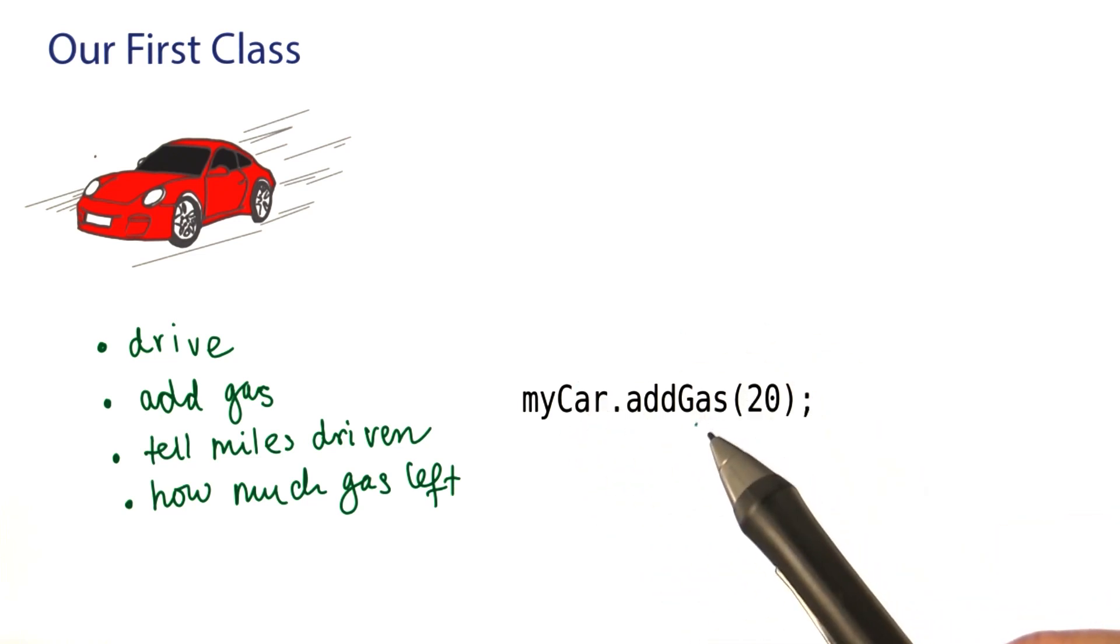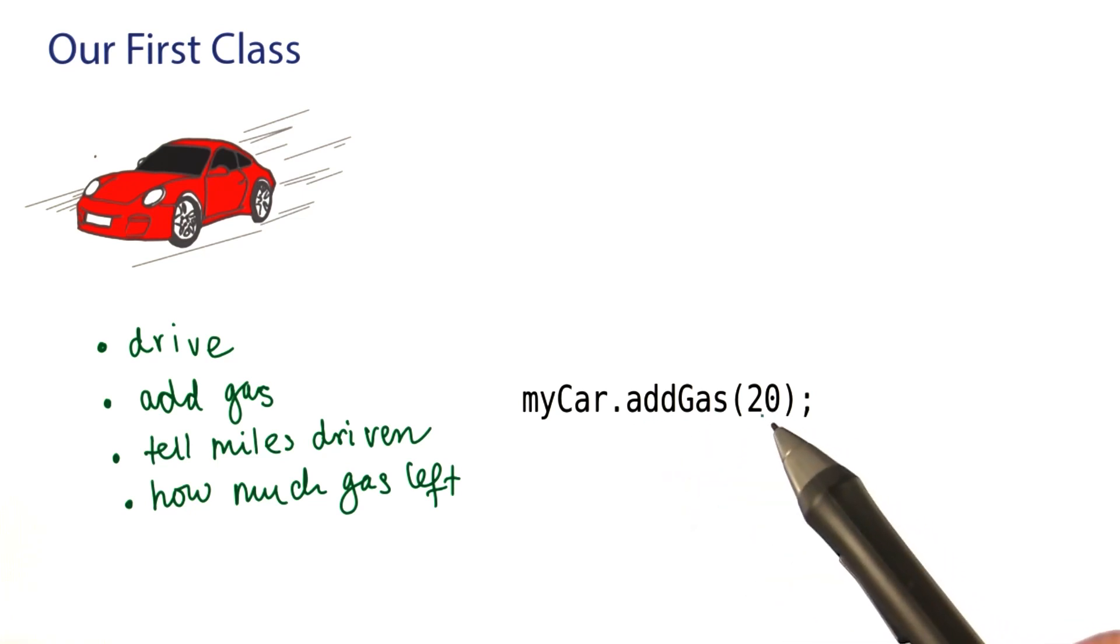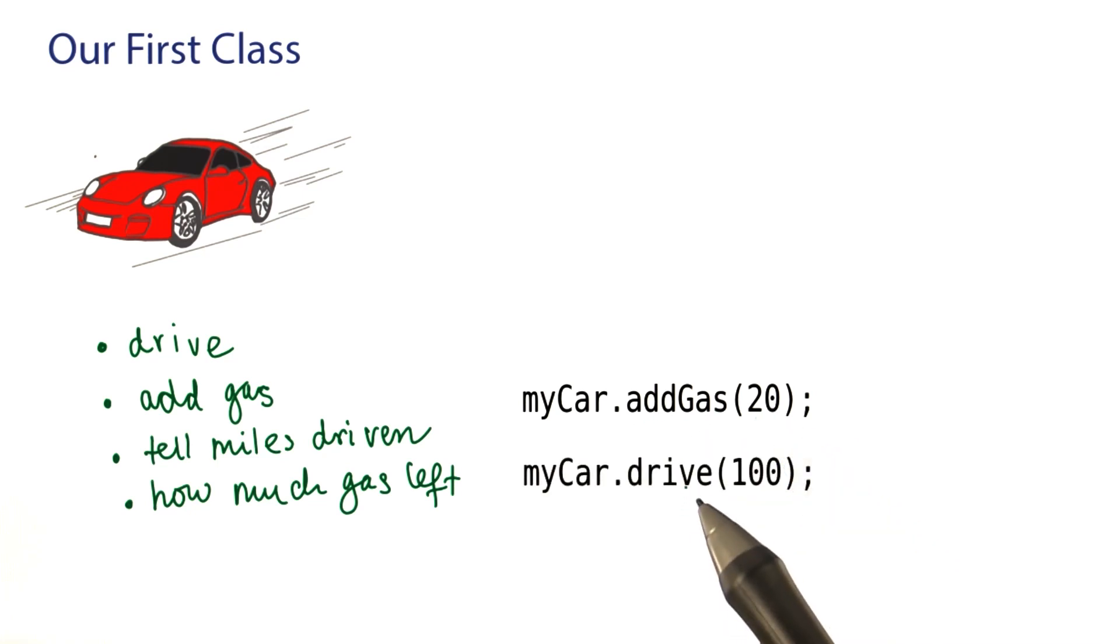And here's how I might want to call the add gas method. The name of the method, add gas, and here I'd add 20 gallons. To make the car drive, call the drive method on the car.